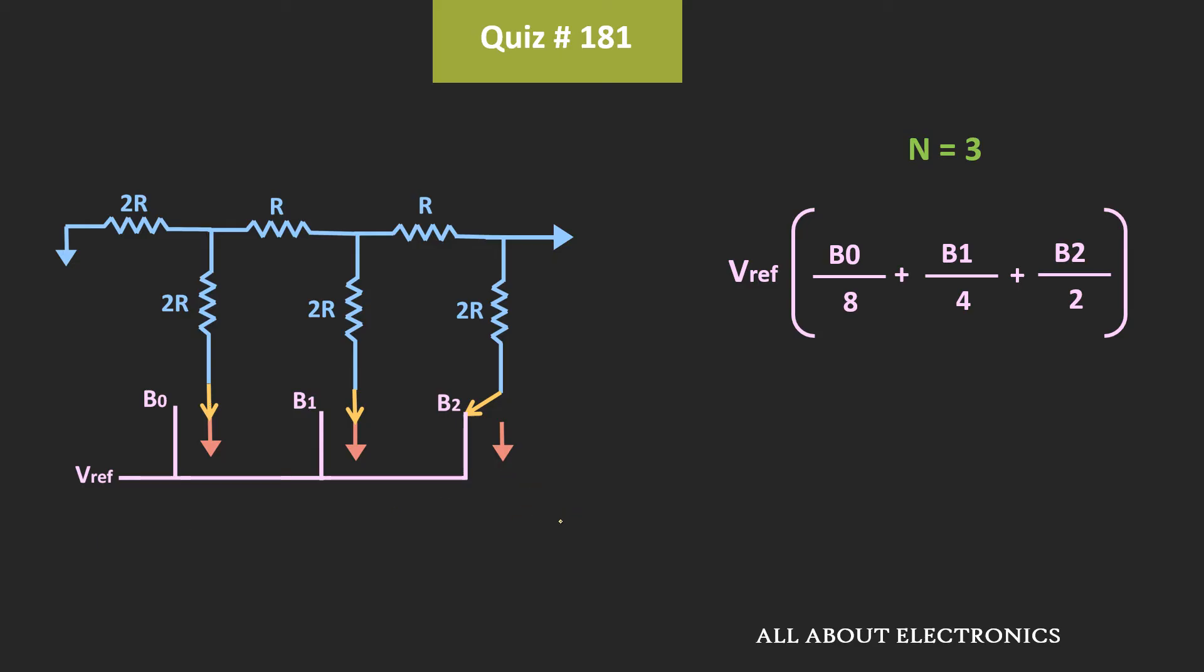Now here, we have been given that logic 0 is equal to 0V and logic 1 is equal to 10V. That means the value of this reference voltage is equal to 10V. And in general, for the 3-bit DAC, if we see the expression of the output voltage, then it can be given by this expression.